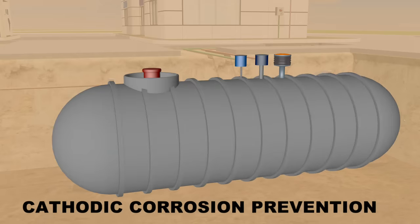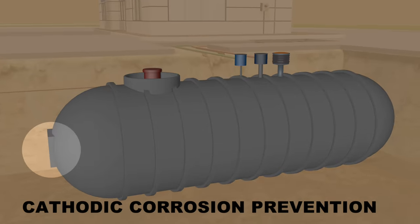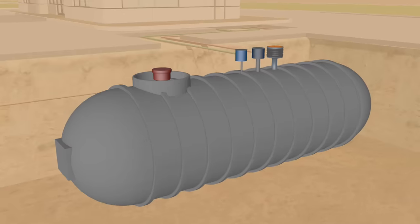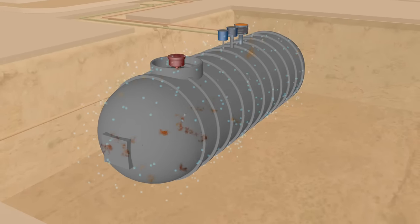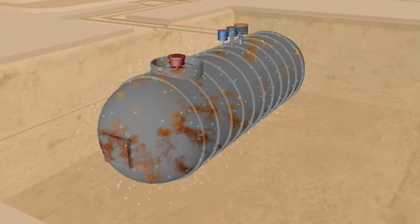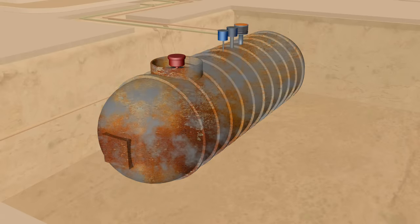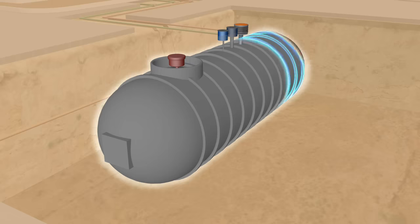When uncoated steel tanks are used, cathodic corrosion prevention systems are required. Corrosion, or rust, is caused when moisture in the soil draws off electrons from iron molecules in the steel. Applying a slight electrical current, basically a stream of free electrons, helps keep the iron molecules intact.